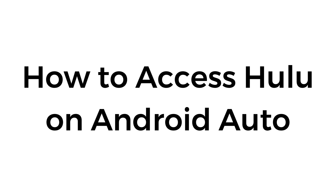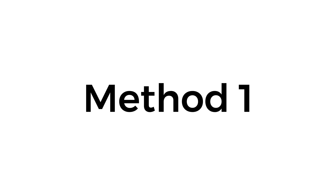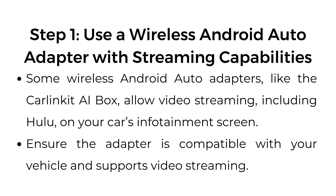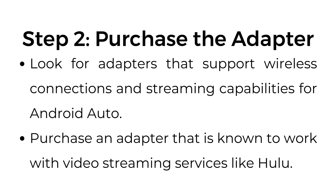How to access Hulu on Android Auto. Method number one, Step number one: use a wireless Android Auto adapter with streaming capabilities. Some wireless Android Auto adapters, like the Car Linked AI Box, allow video streaming including Hulu on your car's infotainment screen. Ensure the adapter is compatible with your vehicle and supports video streaming.